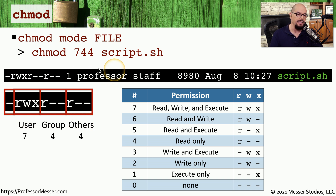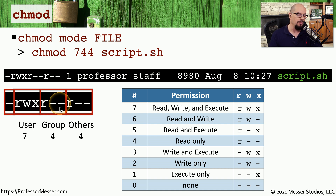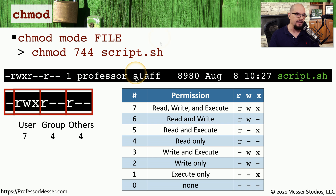This means the user — in this case the user for the file is professor — has read, write, and execute rights. If you are in the group, which is the second designation listed right after the name professor, the group is staff. If someone from the staff group uses this file, they would have read access but no write or execute access. And if you are anyone else not professor or staff, your rights would also be read-only with no write or execute permission. We commonly set these permissions using octal notation — for example, chmod 744 sets a 7 for the user (read, write, execute), a 4 for the group (read-only), and a 4 for everyone else (read-only).